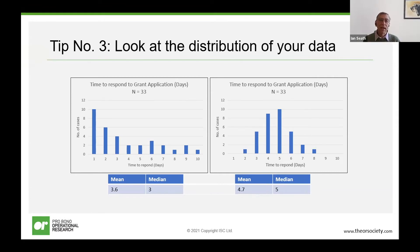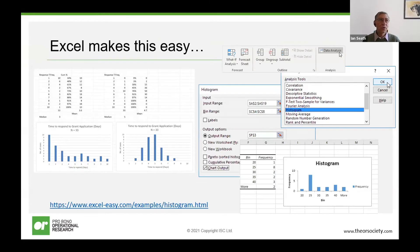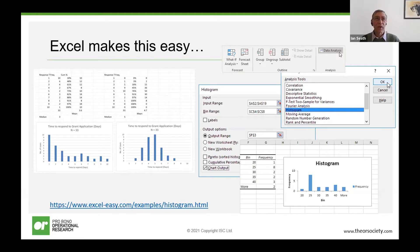In terms of deciding which average to use, it's really helpful to think about distributions of data. All too often we gather data and ask Excel to tell us what the mean is, without looking at the distribution. It's very helpful to plot out the frequency distribution. This shows two sets of data around grant application processing — 33 grant applications in each. One has a very long-tailed distribution and the other has a bell-shaped normal distribution. If you work out the mean and the median, you get quite different values. I strongly encourage you to look at the distribution of the data before leaping to calculating the mean. In Excel, the data analysis pack add-in enables you to plot histograms — the quick and easy way to plot distribution diagrams.